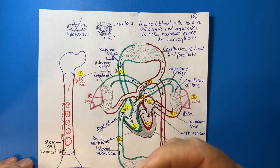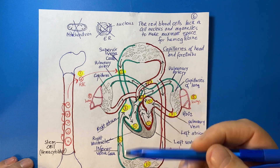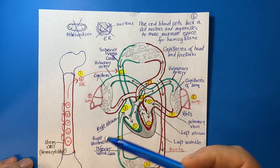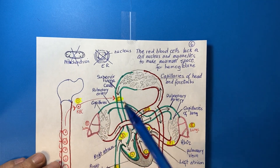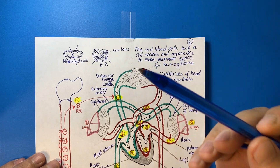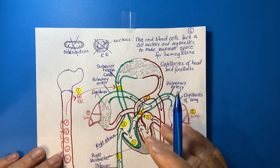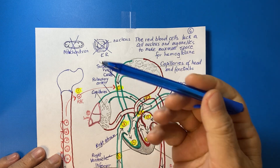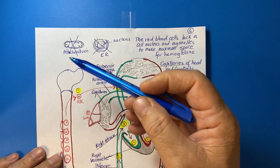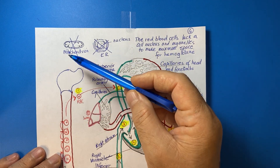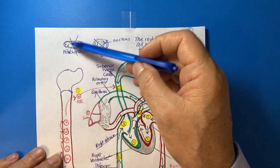Red blood cells first produce their ribosomes, which are needed to make hemoglobin and other proteins. After hemoglobin reaches around 30% of the cell's content, the red blood cells begin destroying organelles such as the endoplasmic reticulum, Golgi apparatus, mitochondria, and nucleus, leaving only hemoglobin. Mitochondria are destroyed because they use oxygen during cellular respiration to provide energy, but the purpose of the red blood cell is to transport oxygen through the circulatory system — that is why the mitochondria are not needed.